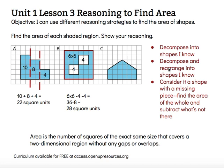For shape C, I'm not sure what to do at first. This shape has 1, 2, 3, 4, 5 sides — it's a pentagon. It looks kind of like home plate, but not quite. So I'm going to look and see if I can decompose it into something that I know.